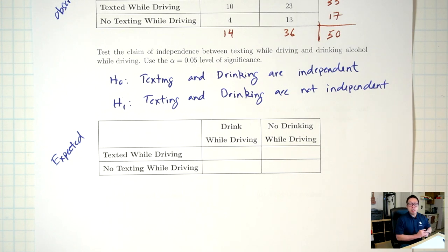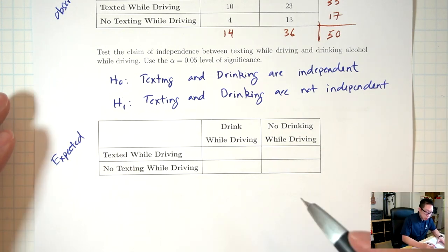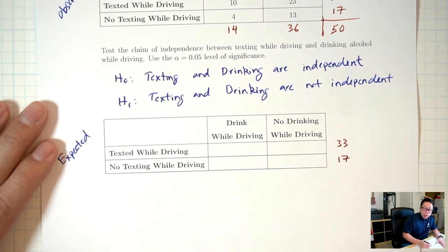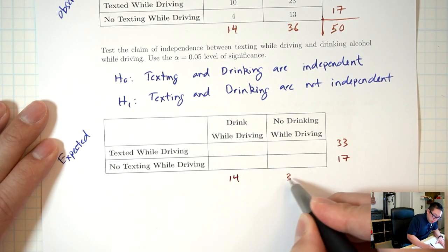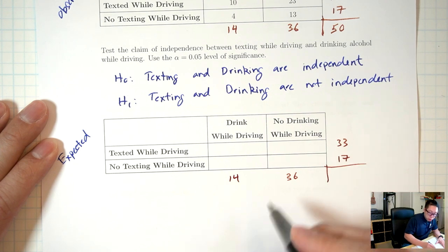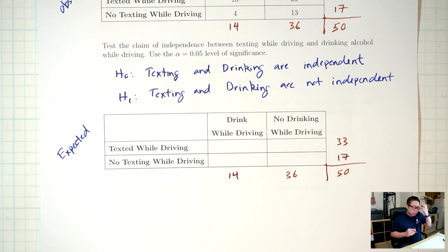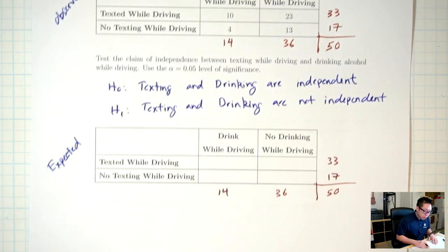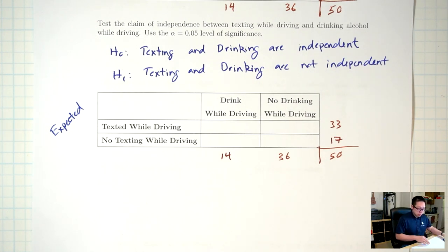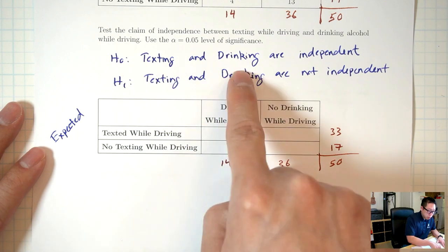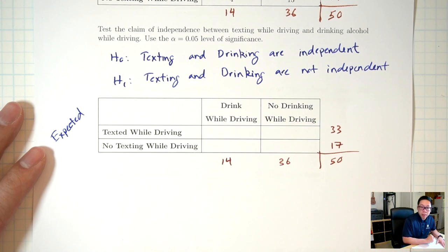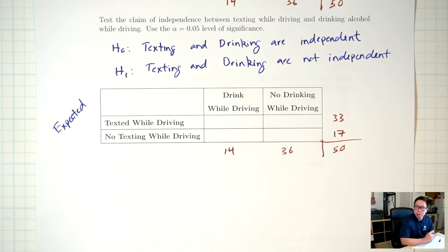Now, how do I find the expected numbers? I want the same row totals and the same column totals as the original, and the same grand total. I want to fill in this table so that, assuming texting and drinking are independent, what should these numbers be? To figure this out, I need to go back to the definition of independence from unit two.